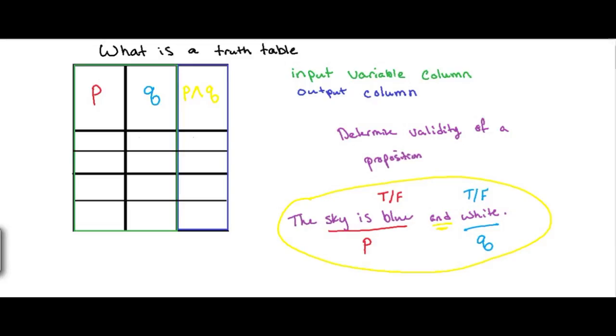We're going to take combinations of whether the sky is blue is true or false and the sky is white is true or false and use this to determine the validity of the statement and see when the whole statement is true or false. So the sky is blue is true. So the sky is blue, our proposition P, can be true and we can have our Q being true as well.